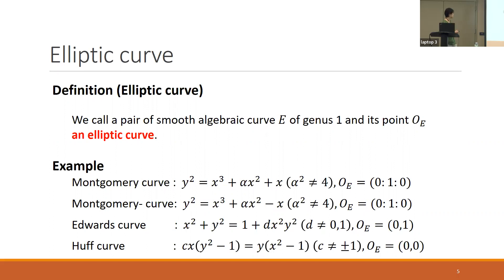Here are some examples of fd-curves. A Montgomery curve is a curve defined by its equation, and O_E equals (0:1:0). An Edwards curve is a curve defined by its equation, and O_E is equal to (0,1). A half curve is defined by its equation and O_E is 0.